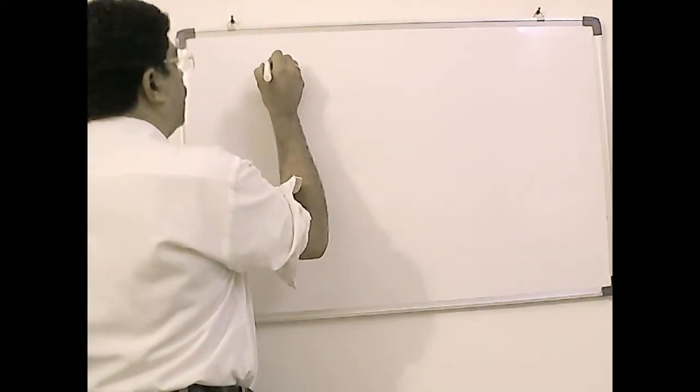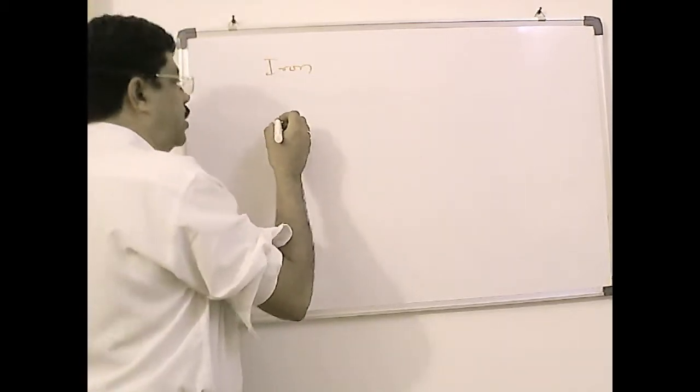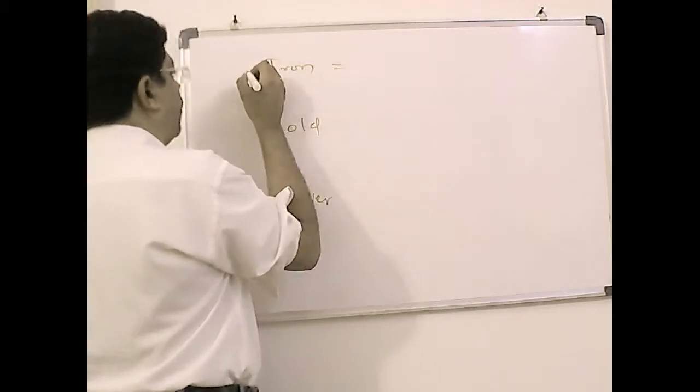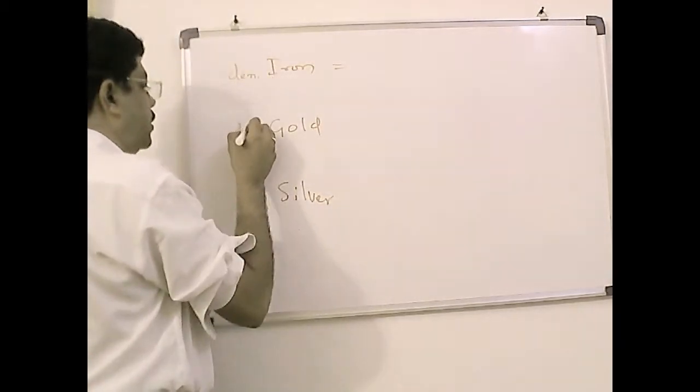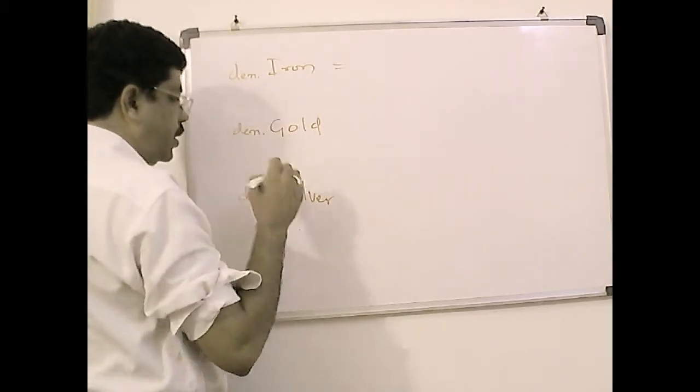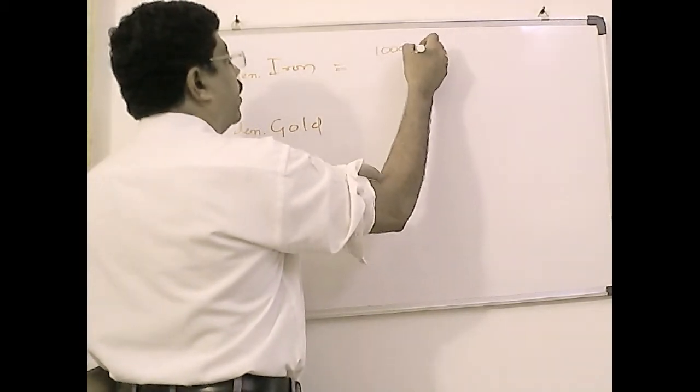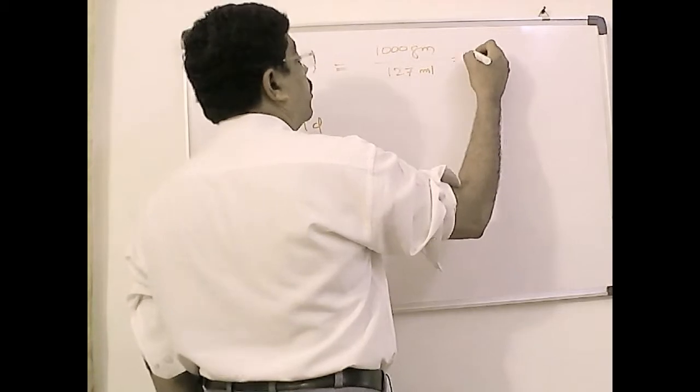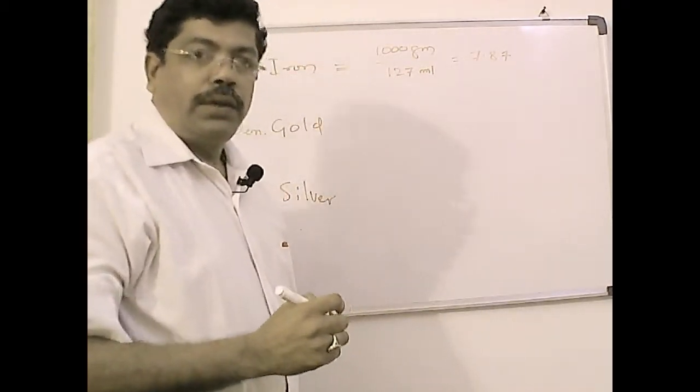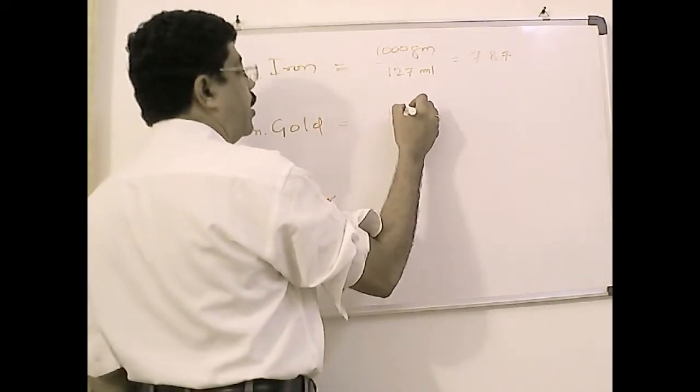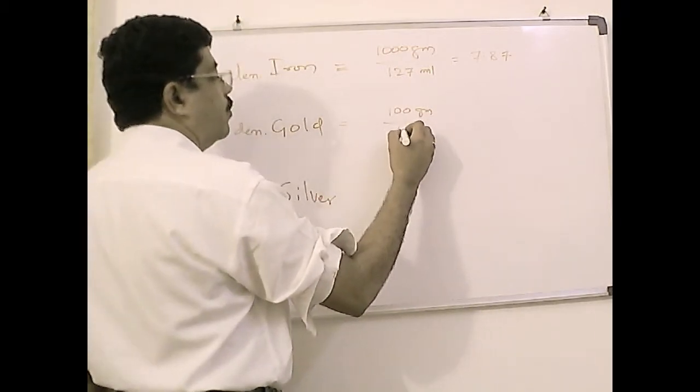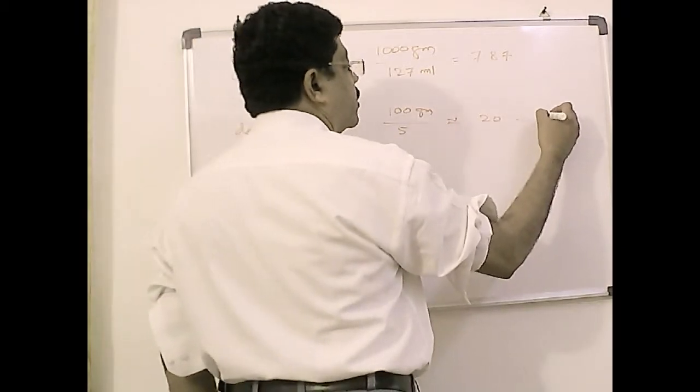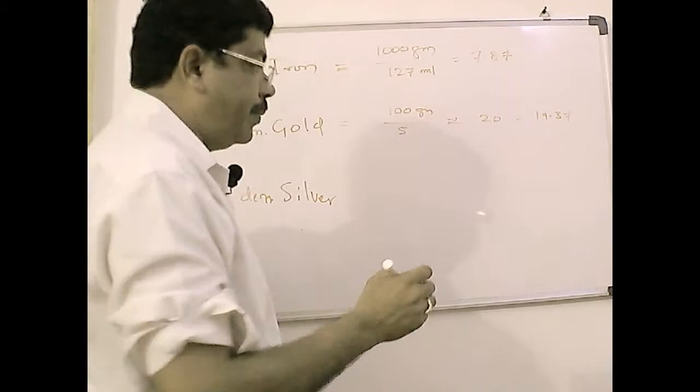Now let us summarize the results and we have checked for three different metals. One is being iron, second being the gold, and third is for silver. And let us calculate densities. For iron we have taken 1000 grams divided by the water displaced was around 127 ml which works out to 7.87. Luckily we got this more accurate. And in case of gold we have taken 100 grams and the quantity of water displaced was 5 ml which is approximately equal to 20. In fact the book value is 19.37 is the correct and precise value.